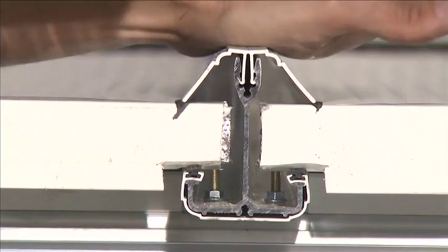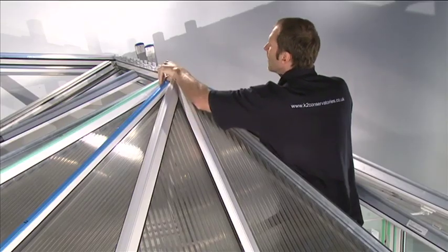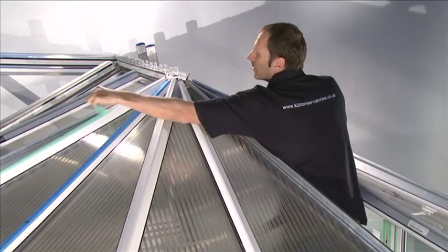When the glazing bar top cap is attached, ensure that the bottom face of the top cap is aligned with the bottom face of the glazing bar. Remove the protective film from the glazing bar top cap.